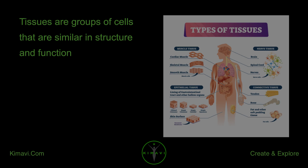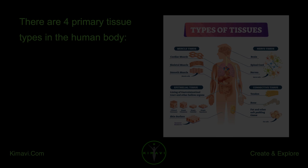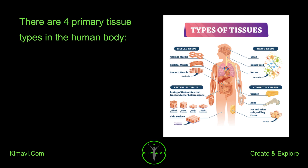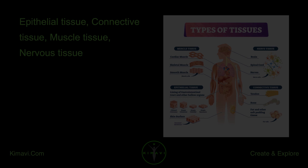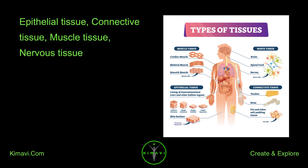Tissues are groups of cells that are similar in structure and function. There are four primary tissue types in the human body: epithelial tissue, connective tissue, muscle tissue, and nervous tissue.